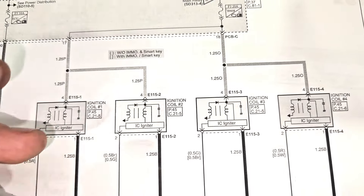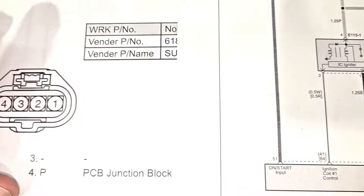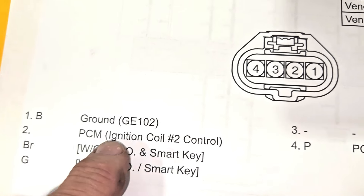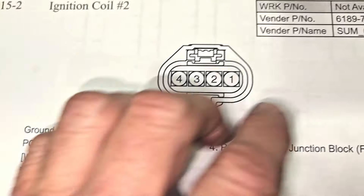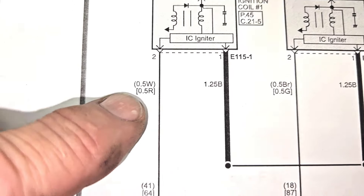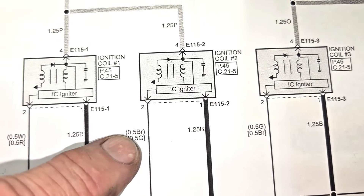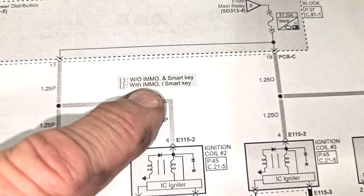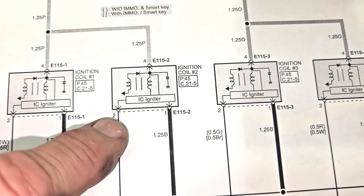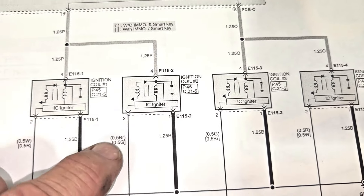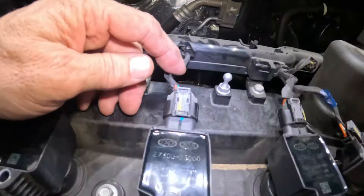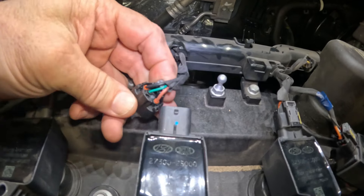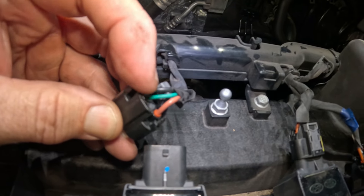We're going to stick a noid light on and start it up to see if it blinks. Here is the ignition coil number two connector — pin one is ground, pin two is PCM. The schematic shows the wire could be brown or green depending on whether you have an immobilizer or smart key, but we know number two and number one is black. I'm going to disconnect this connector right here — and it looks like we've got black and green, so that's pins one and two right there. This is my noid light — I made it out of an old Kia Soul mood lighting LED.